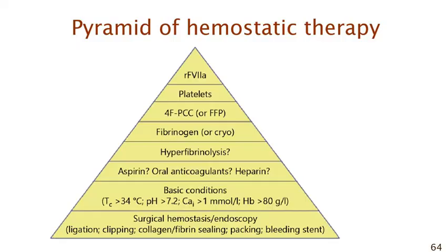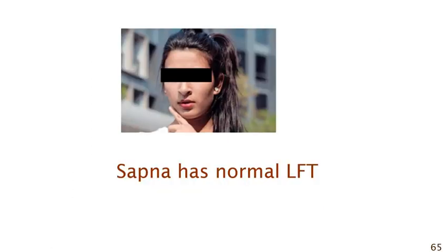The pyramid of hemostatic therapy tells you the most important step is surgical hemostasis — look for the varices and ligate or inject them. Then correct basic conditions: pH, calcium status, and hemoglobin. Then check if the patient is on heparin, warfarin, or aspirin. Then look for hyperfibrinolysis and whether epsilon-aminocaproic acid or tranexamic acid is required. Then consider fibrinogen, then plasma — but in clinical practice we often go the other way and just keep pushing plasma. Sapna has normal liver function, so cirrhosis is excluded.